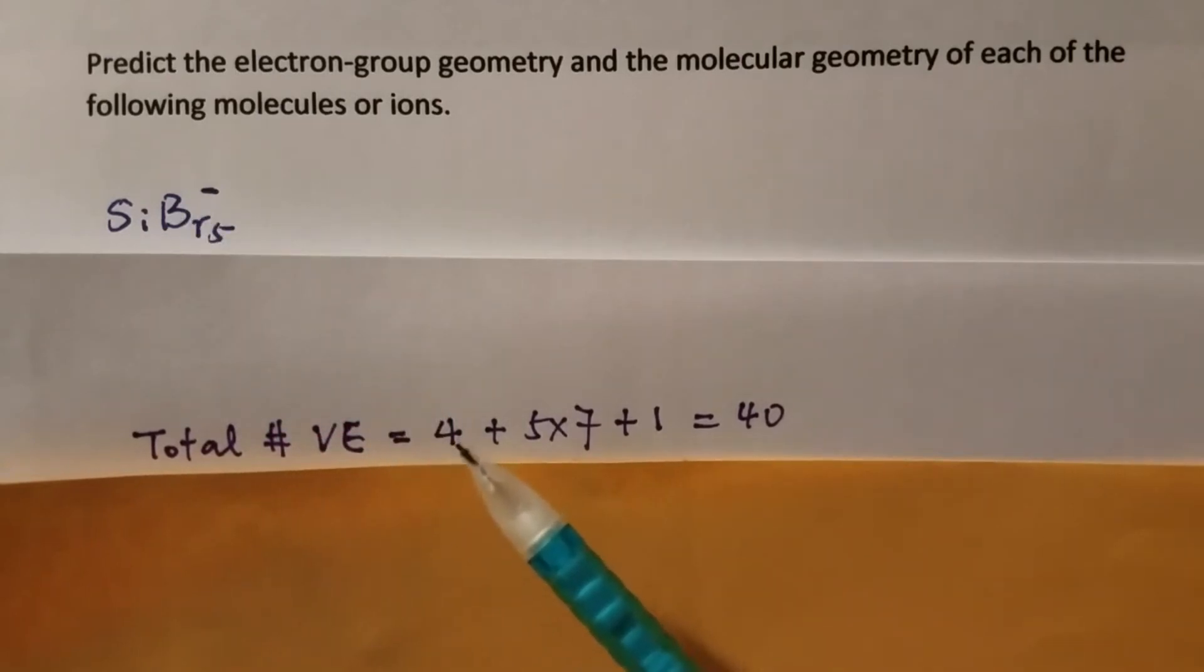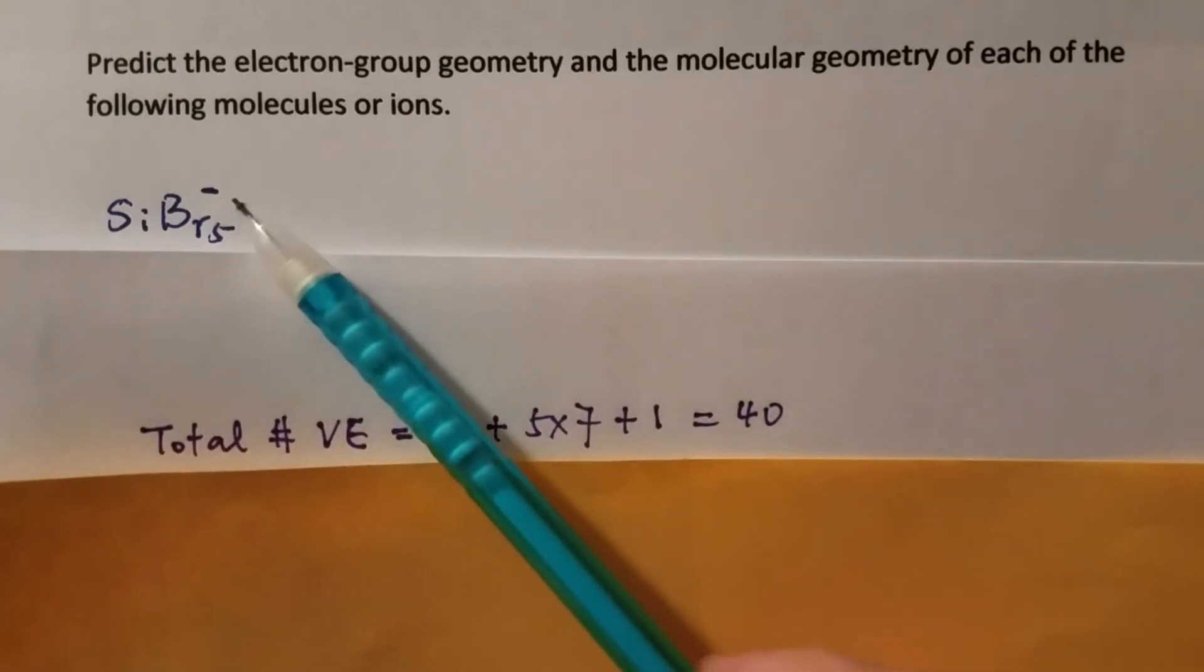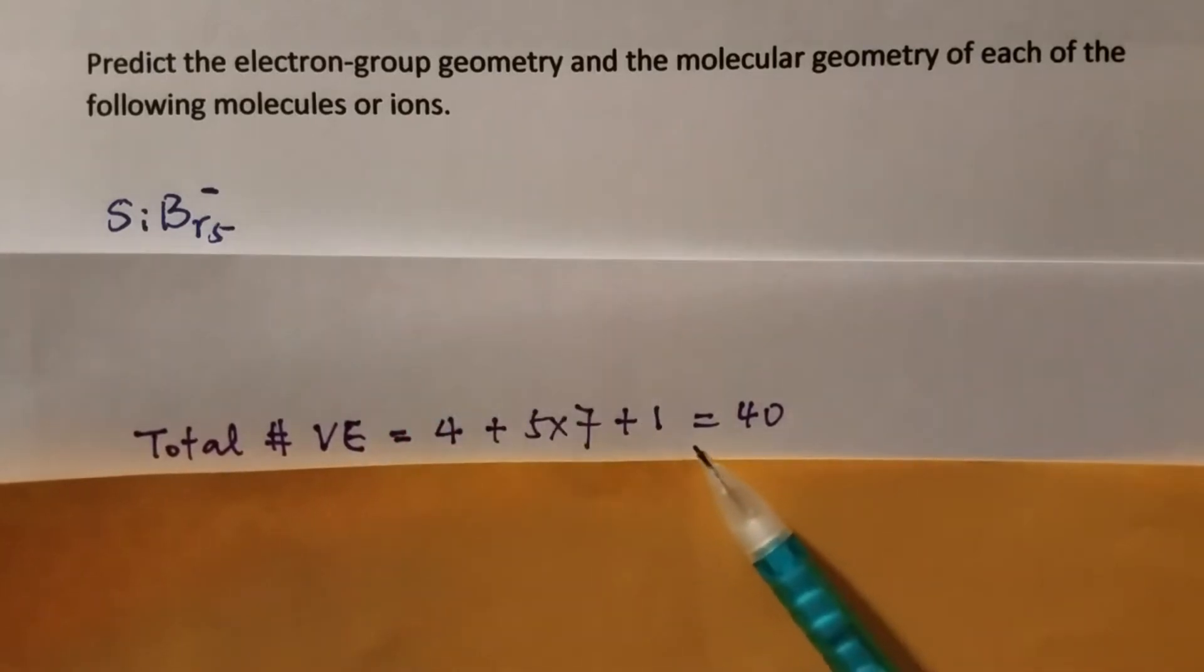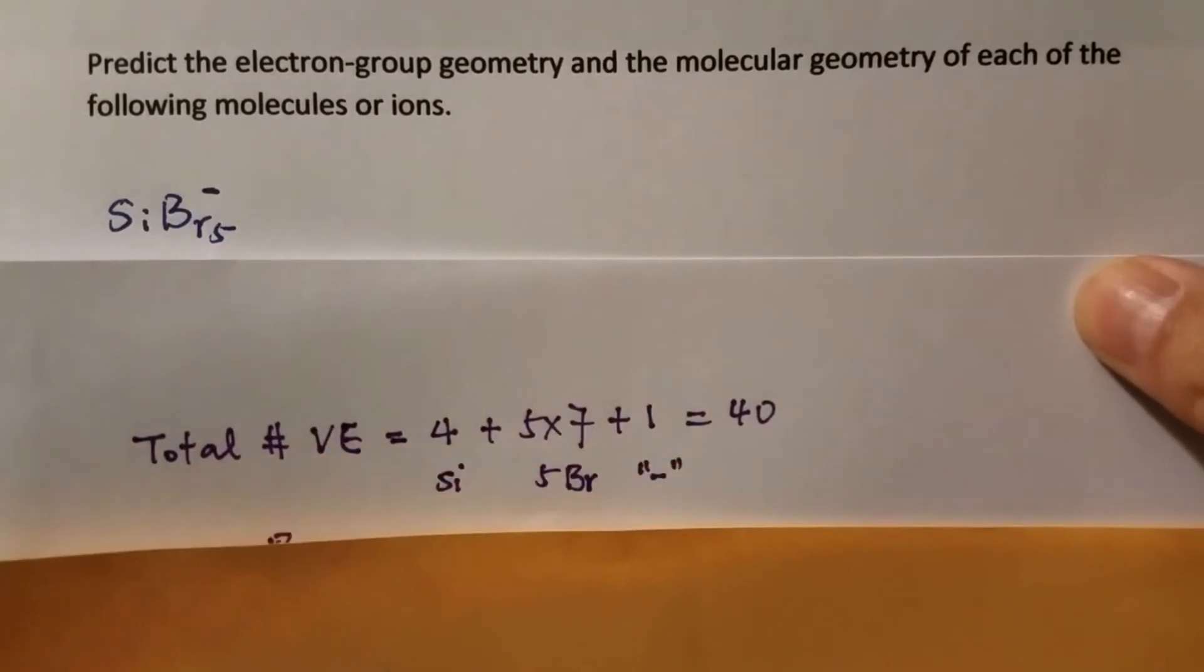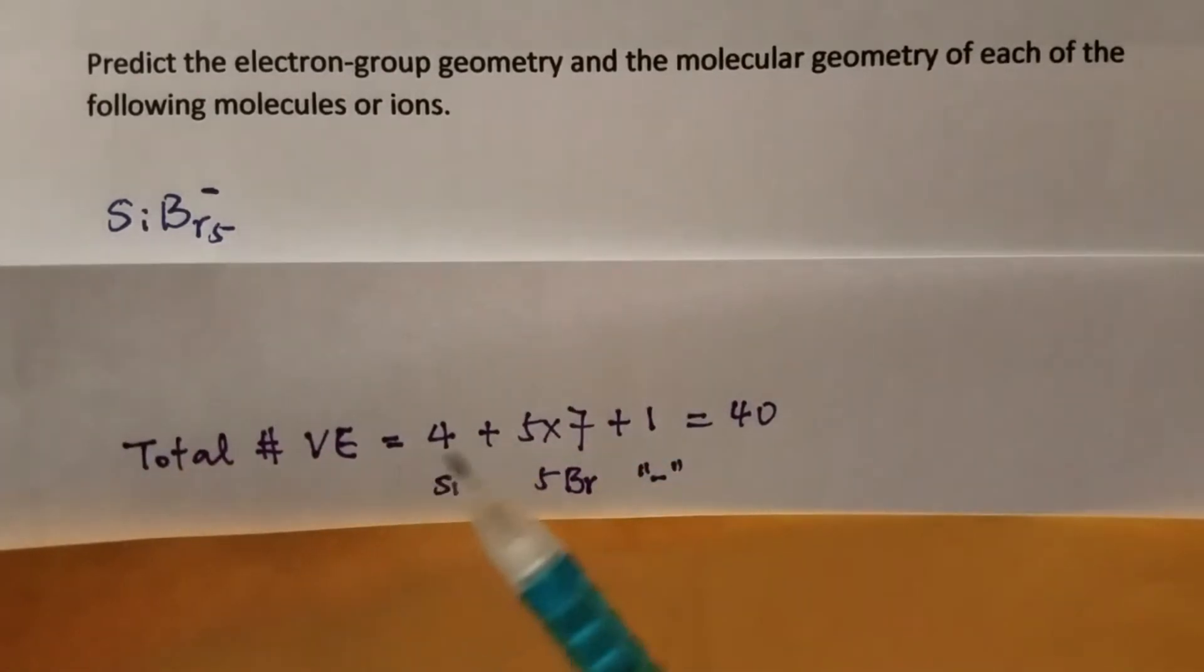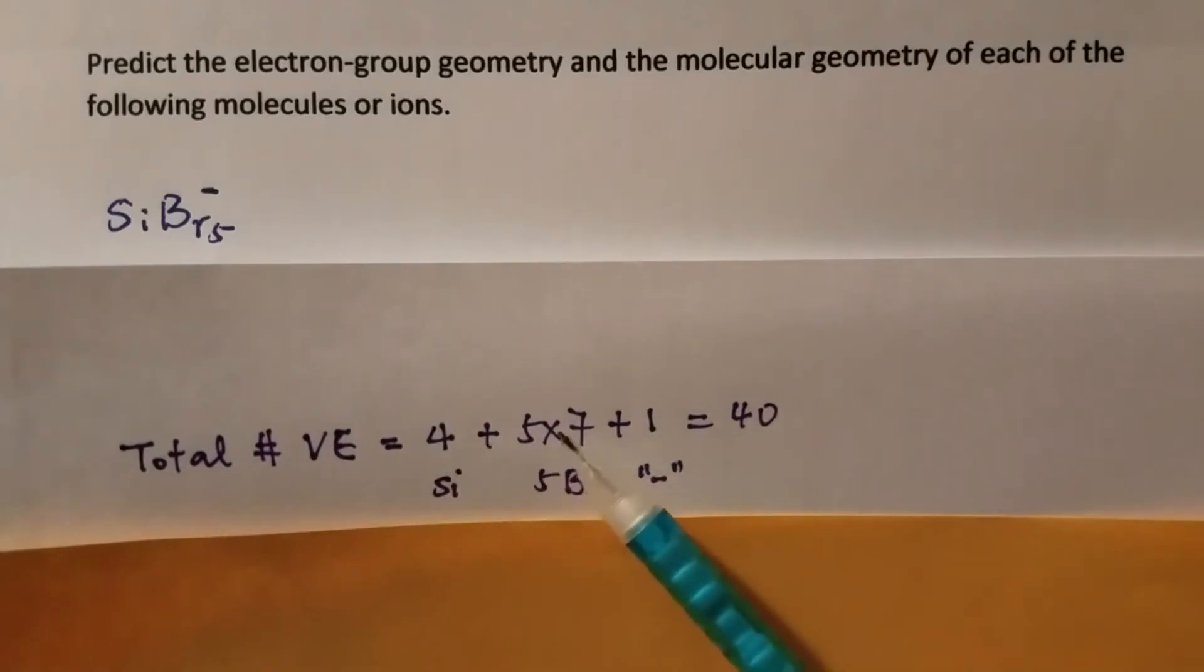Silicon has four valence electrons in group 4A. Bromine has seven valence electrons, and we have five of them. And this negative one charge means it gained one more electron. So four for silicon, seven for bromine, and then one for the negative one charge. Then total we have 40 electrons.